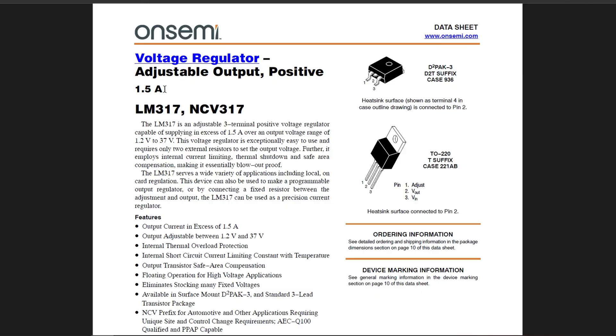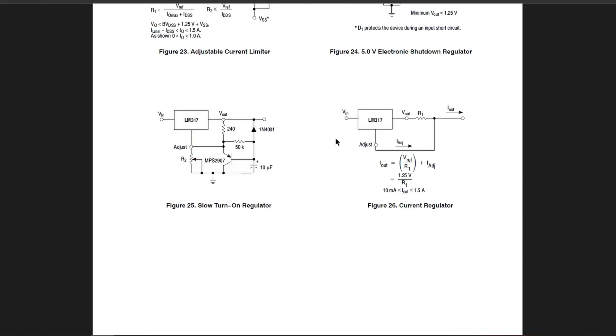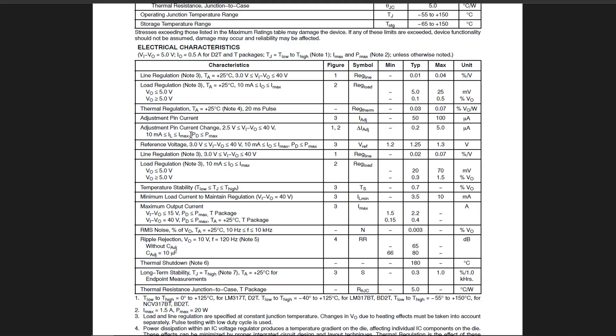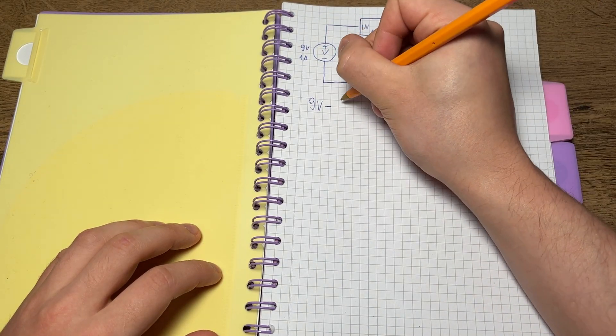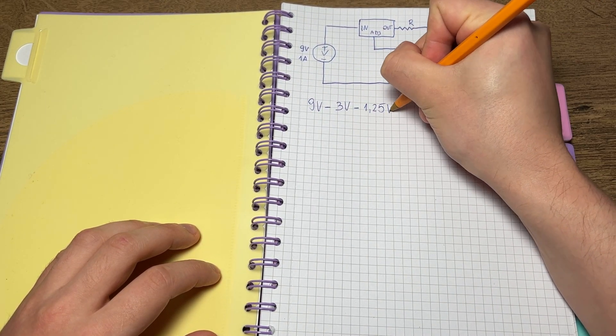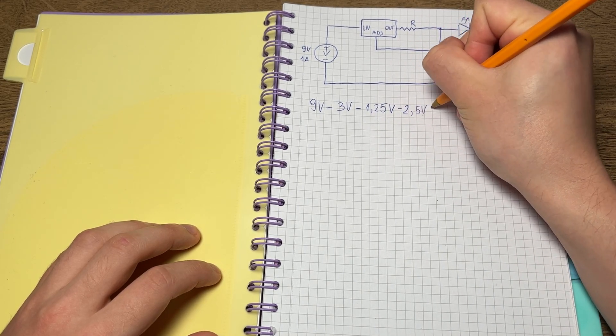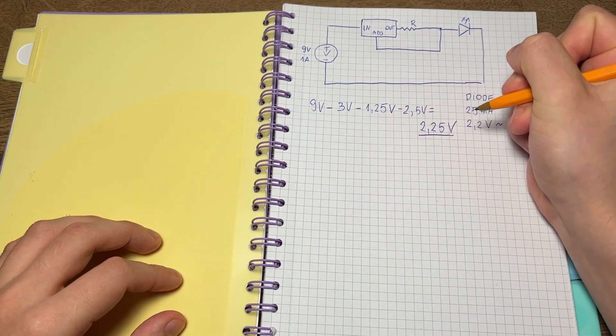And this is where the voltage regulator comes in. I choose LM317 because it is compact, cheap, popular and most importantly adjustable. To make it into a current regulator we need to put a resistor in series that will generate a difference of 1.25 volts to adjust pin and to limit current to 25 milliamps. Now our source is 9 volts. We can see that minimal difference between input and output is 3 volts. Then we need 1.25 volts at a resistor and around 2.5 volts at diode. So 9 volts minus 3 minus 1.25 minus 2.5 and we have 2.25 volts left. It is enough for our circuit.